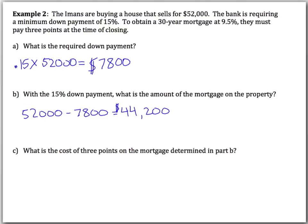Welcome back. You should have come up with a required down payment of $7,800. With the 15% down payment, the mortgage on the property is going to be $44,200.